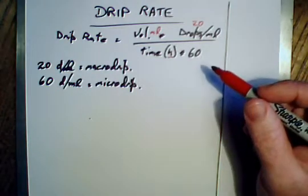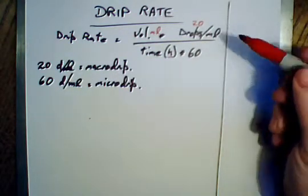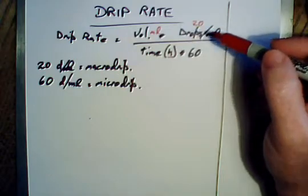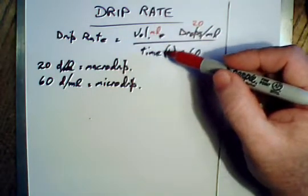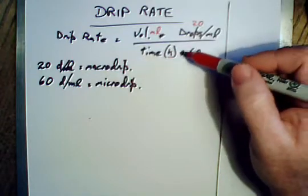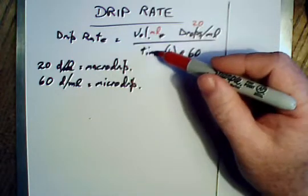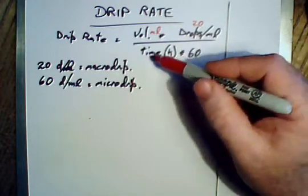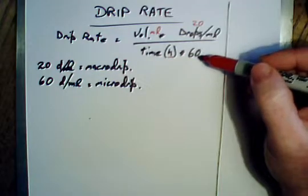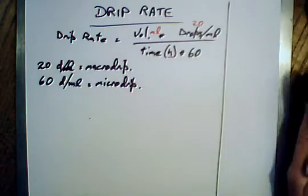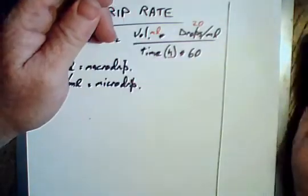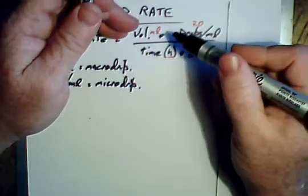Now just looking at this, we need to keep all these units correct. You can see at the bottom here we've got time in hours times 60, so essentially we're making this time in minutes.